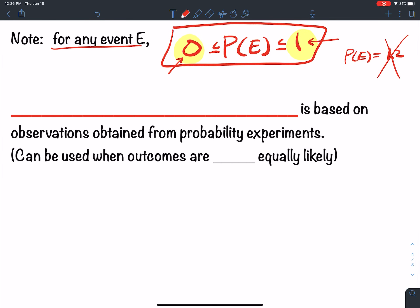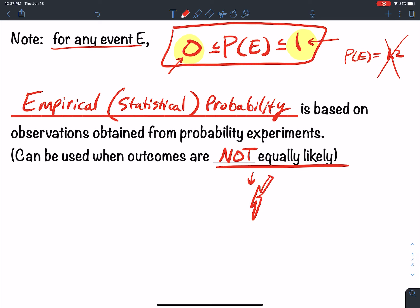The next type of probability is empirical. Empirical, this is where people make the big bucks, also known as statistical probability. This is based on observations obtained from probability experiments. They can be used when the outcomes are not equally likely. Most times in life, outcomes are not equally likely. You are not as likely to get struck by lightning as you are to not get struck by lightning.